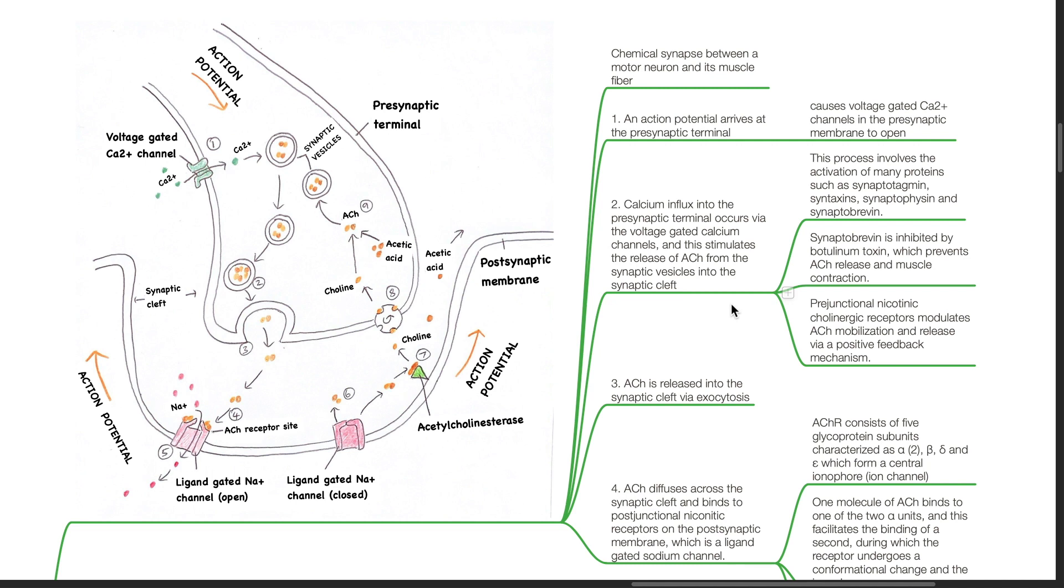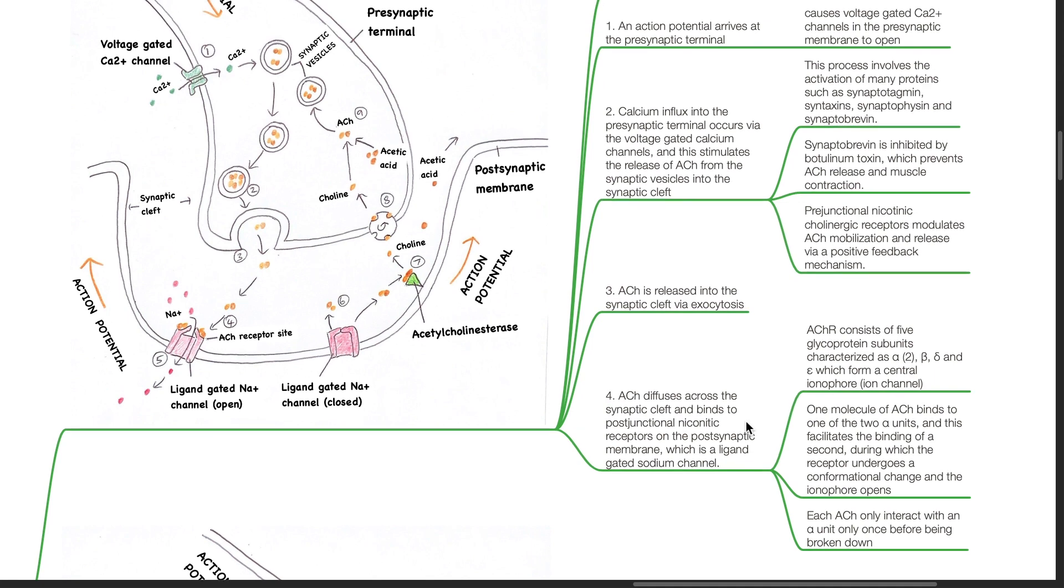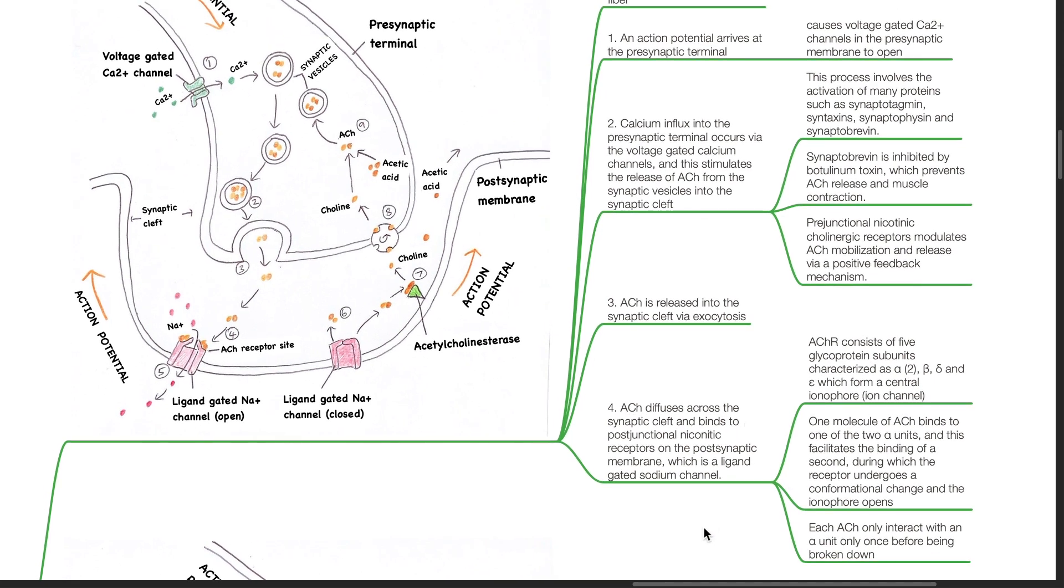Prejunctional nicotinic cholinergic receptors modulate ACH mobilization and release via a positive feedback mechanism. ACH is released into the synaptic cleft via exocytosis. Acetylcholine diffuses across the synaptic cleft and binds to postjunctional nicotinic receptors on the postsynaptic membrane which is a ligand-gated sodium channel.